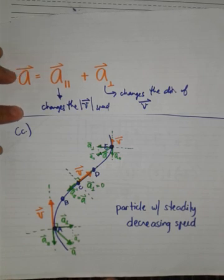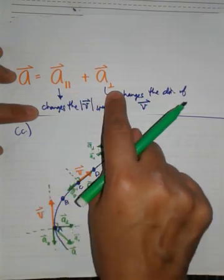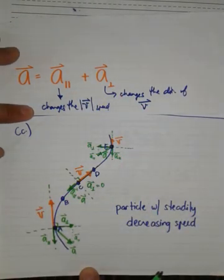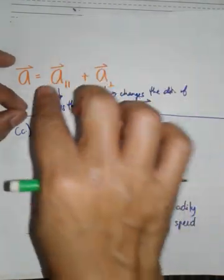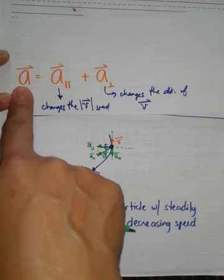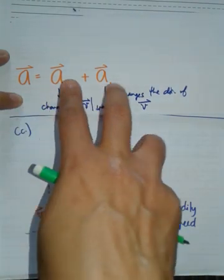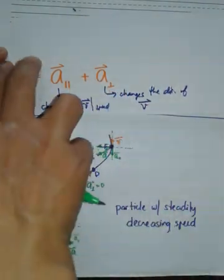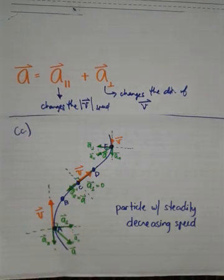Again, please practice how to sketch acceleration, parallel, and perpendicular components. Before I forget, if you know the parallel and perpendicular components and you want to determine A, you can still use Pythagorean theorem to get the magnitude of this. Okay, that's it.